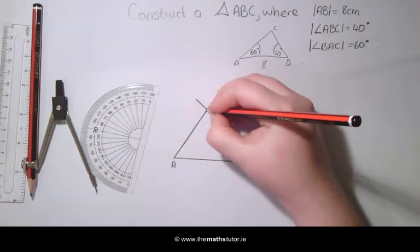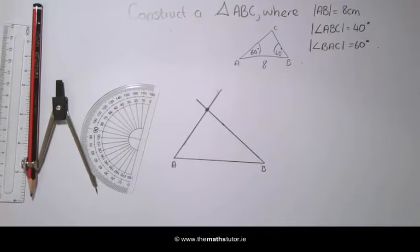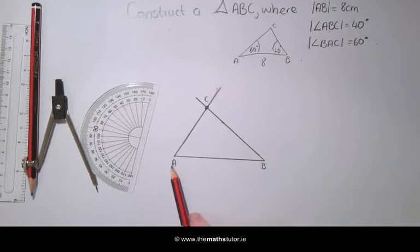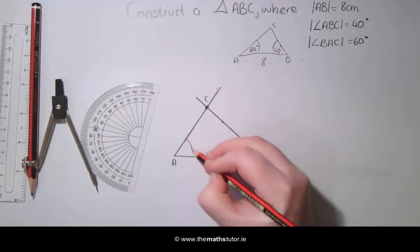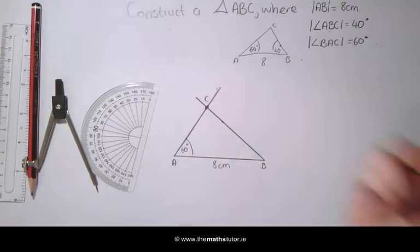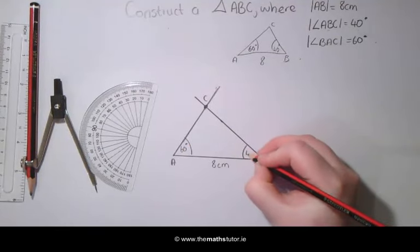Where these two lines meet is the third point of our triangle C. Here we can see we have our line AB which is 8 cm. We have our angle at A which is 60 degrees and we have our angle at B which is 40 degrees.